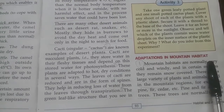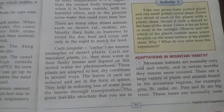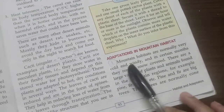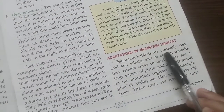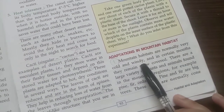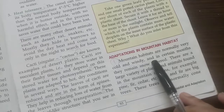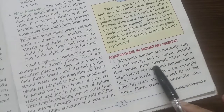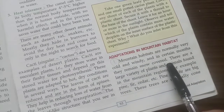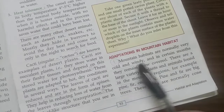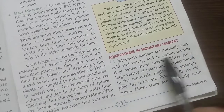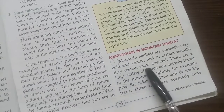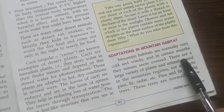Adaptation in Mountain Habitat. Mountain habitats are normally very cold and windy, and in certain months they remain snow covered. It is very cold, and for several months there is intense cold wind, and the area stays snow covered.